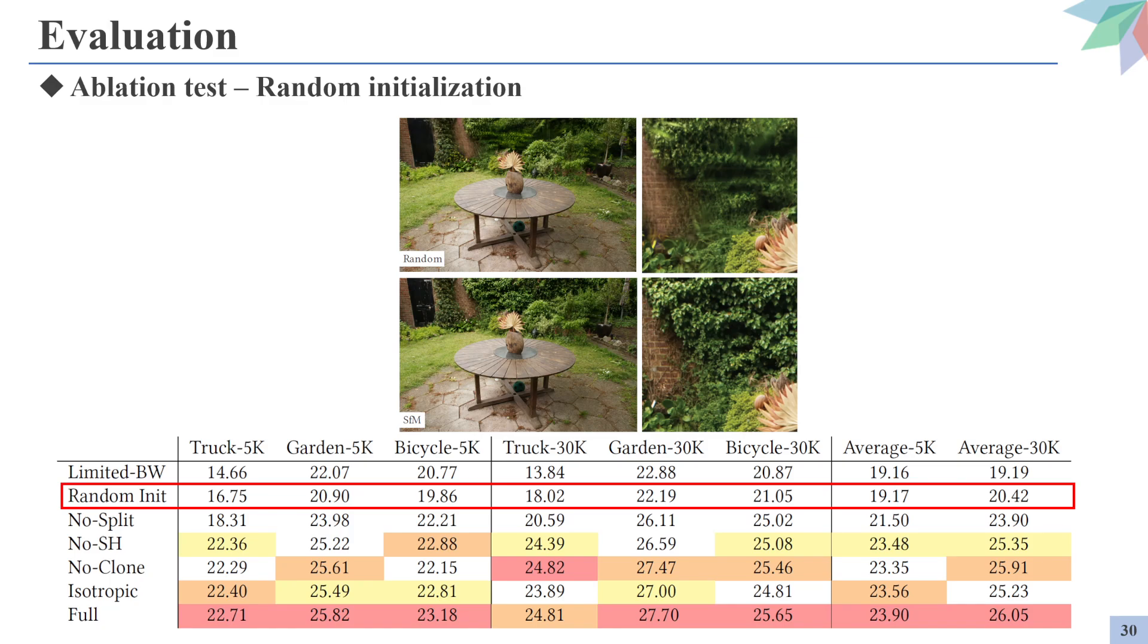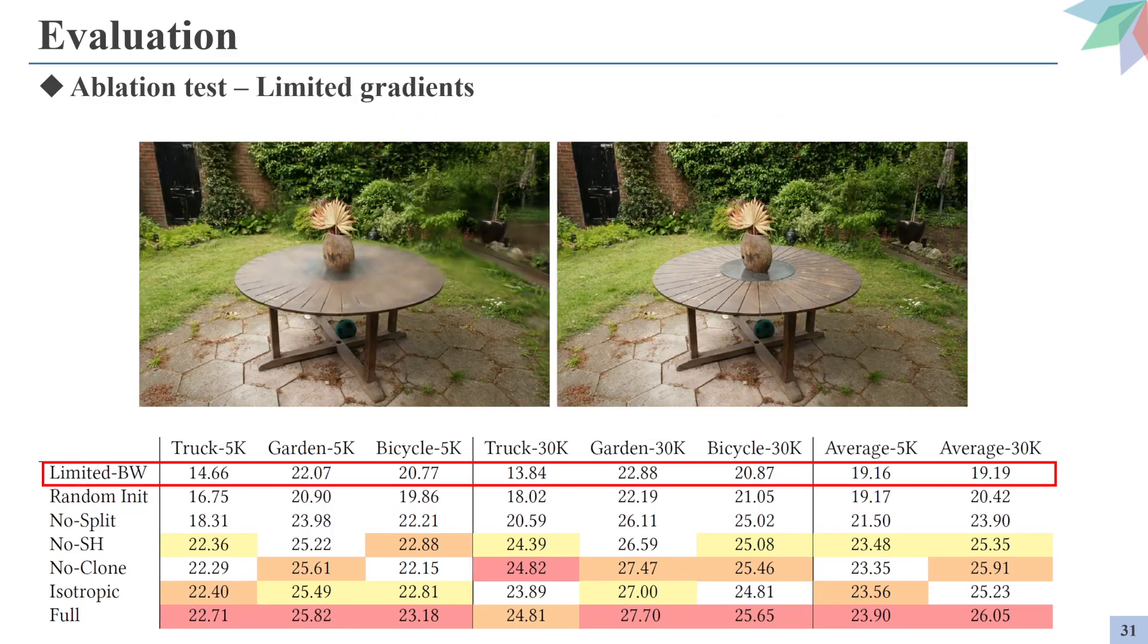This section presents the ablation tests for various components. Initialization of point clouds based on SFM seems to have significant effect. So when the point clouds are initialized randomly instead of using SFM, the quality of the synthesized scenes greatly decreases. And the authors also experimented whether restricting gradient flow to a certain number of Gaussians would preserve the quality of the synthesized scenes while reducing computational loads. But the results, however, show that the quality drops hard when the gradients are restricted.